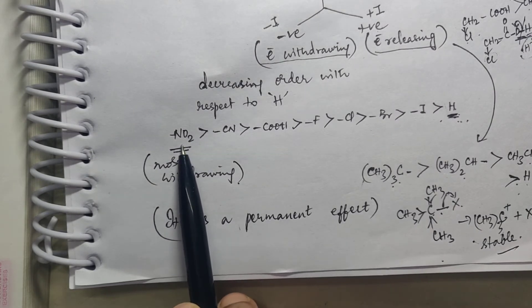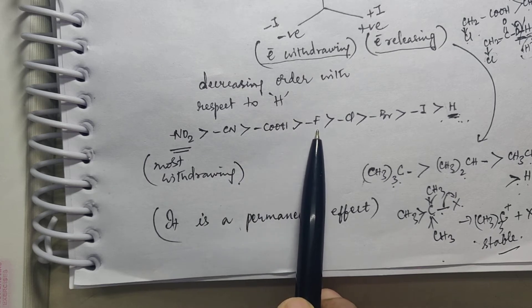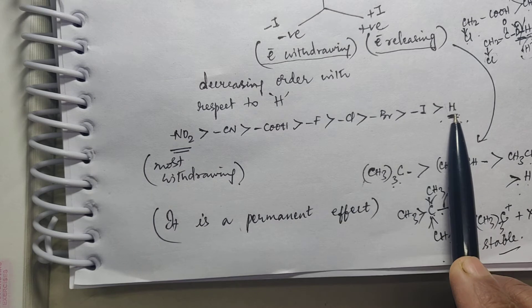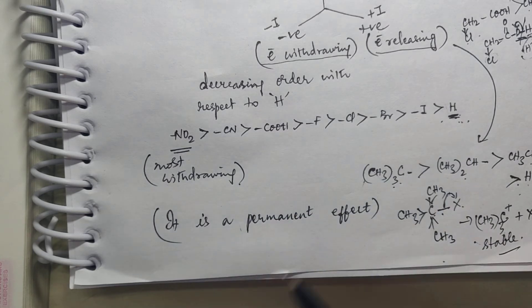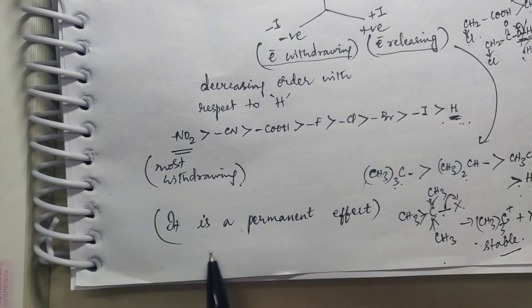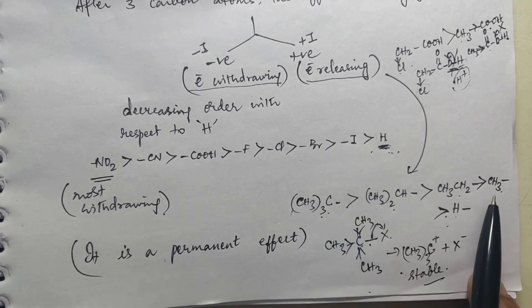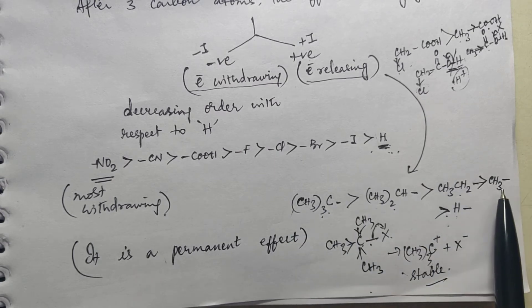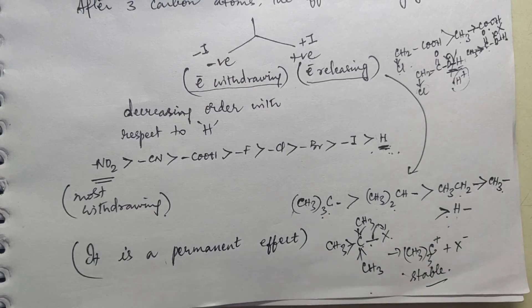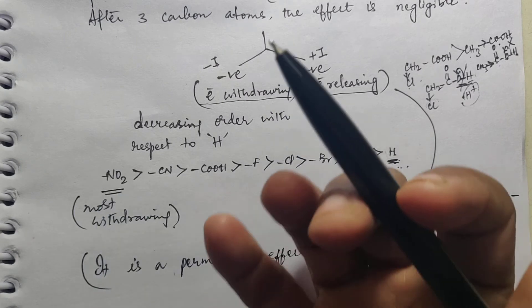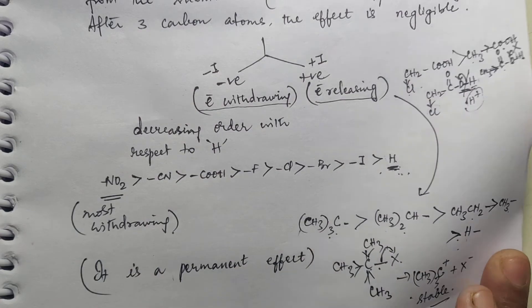So here NO2 is much more electron withdrawing than CN group, than COOH, than all the halogens. Relative to hydrogen, these are all more electron withdrawing — that is why you call it minus I effect. And there are certain groups which are more electron releasing than hydrogen: they are all the alkyl groups — tertiary alkyl, secondary alkyl, primary alkyl, then methyl. Electron releasing means it pushes electrons away from it. Electron withdrawing means it takes electrons towards itself. This is minus I and plus I effect.